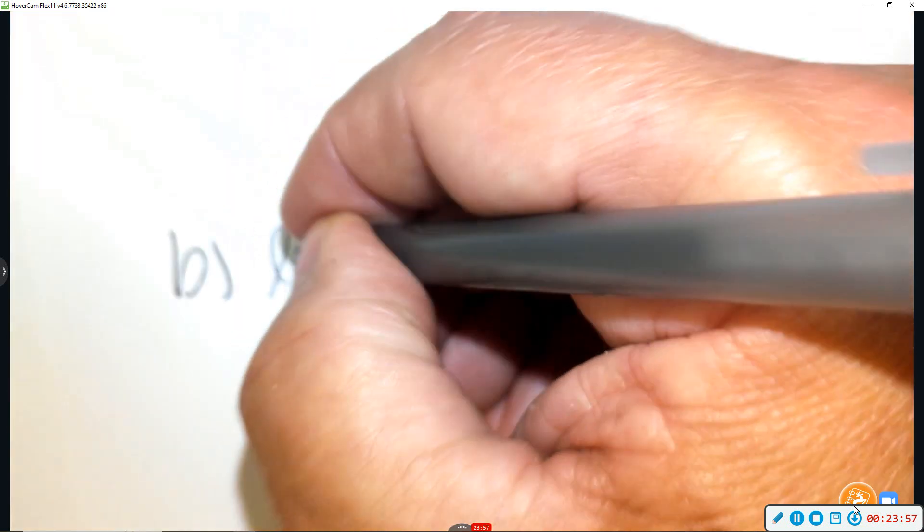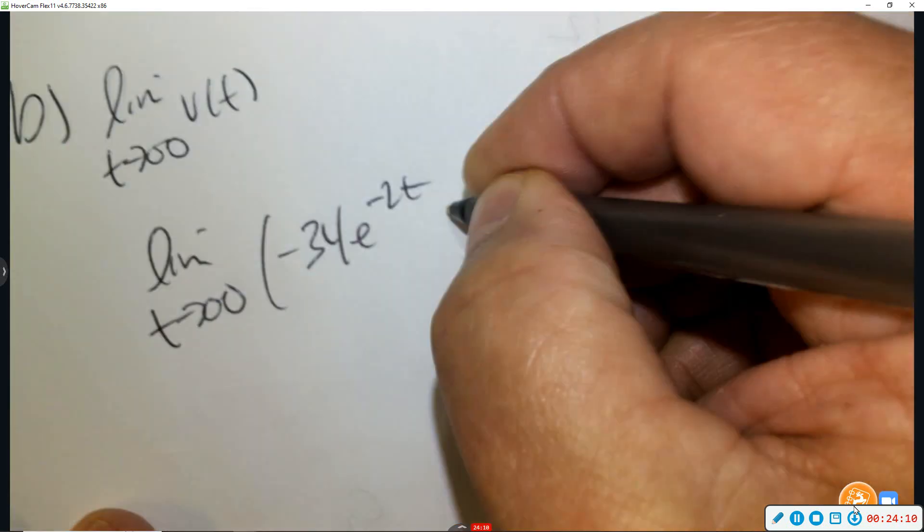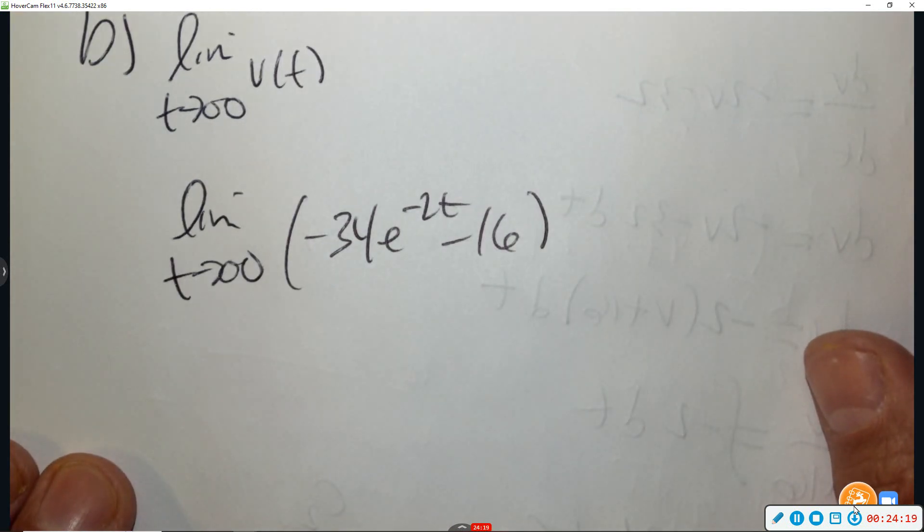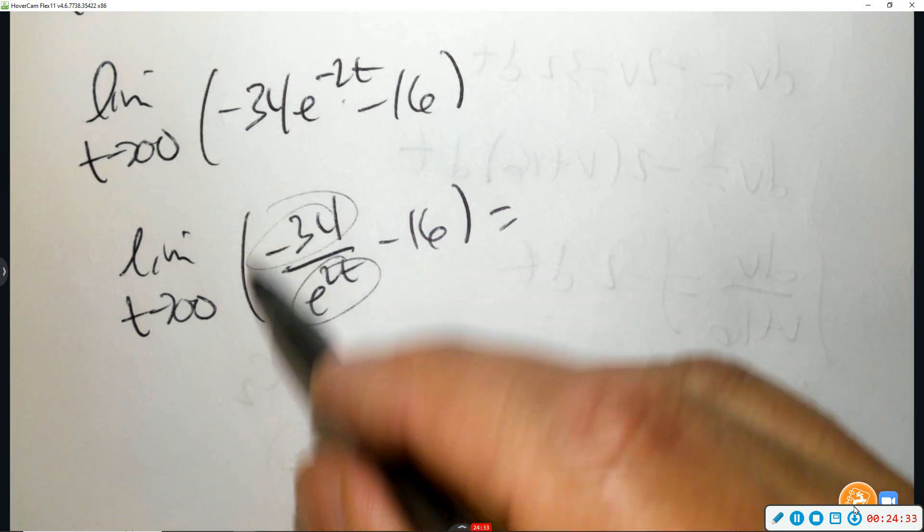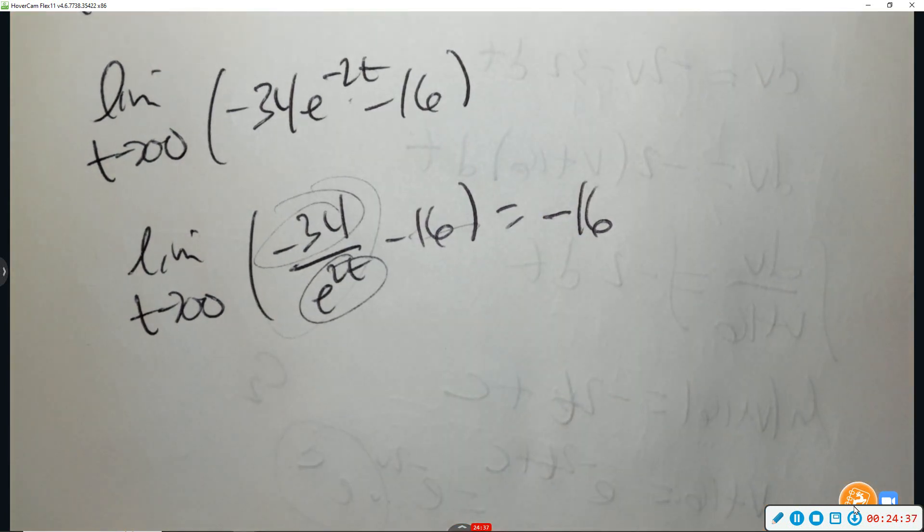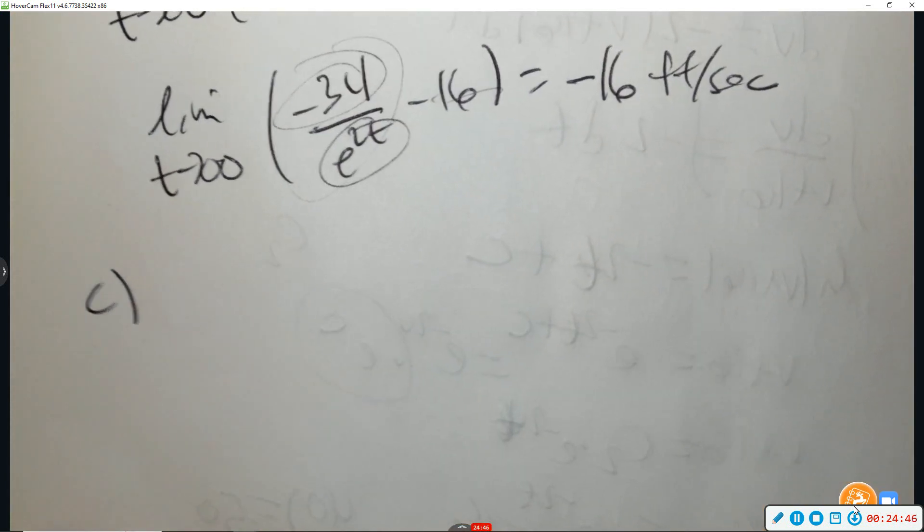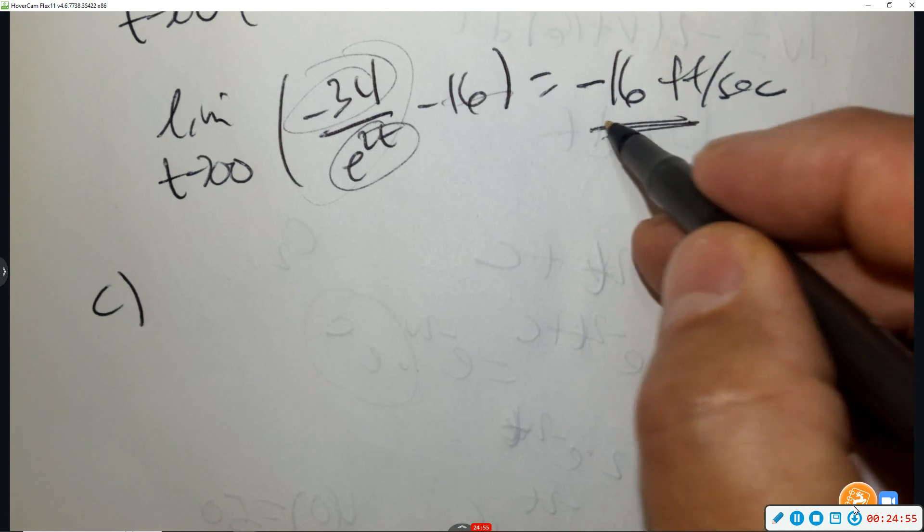Part B says the terminal velocity is defined as the limit as T goes to infinity of V of T. Find the terminal velocity. So what's the limit as this goes to infinity of negative 34, e to the negative 2T minus 16? Now, because we have a negative exponent, it might be easier to understand to put that negative exponent in the denominator and then recognize the bottom is more powerful than the top. So this is 0. So the terminal velocity is going to be negative 16. And that would be feet per second. Part C, so that's the right end behavior. So eventually, that's the speed it will eventually fall at. So the initial one was 50, but eventually, over time, it'll get closer and closer to negative 16.